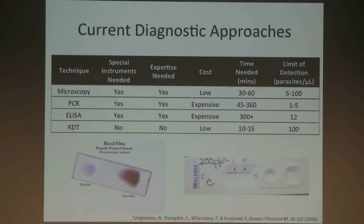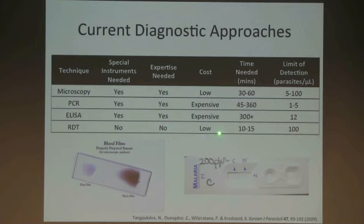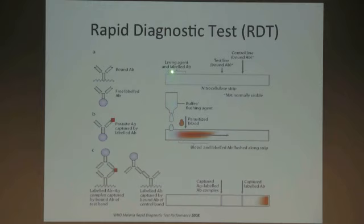ELISA is a laboratory-based assay that doesn't work in this context. A promising solution is an RDT — a rapid diagnostic test. You don't need special instruments or expertise. They don't cost a lot, about 50 cents. They're fast. They're just not that sensitive. So what we decided to do was develop technologies that would make RDTs work better.